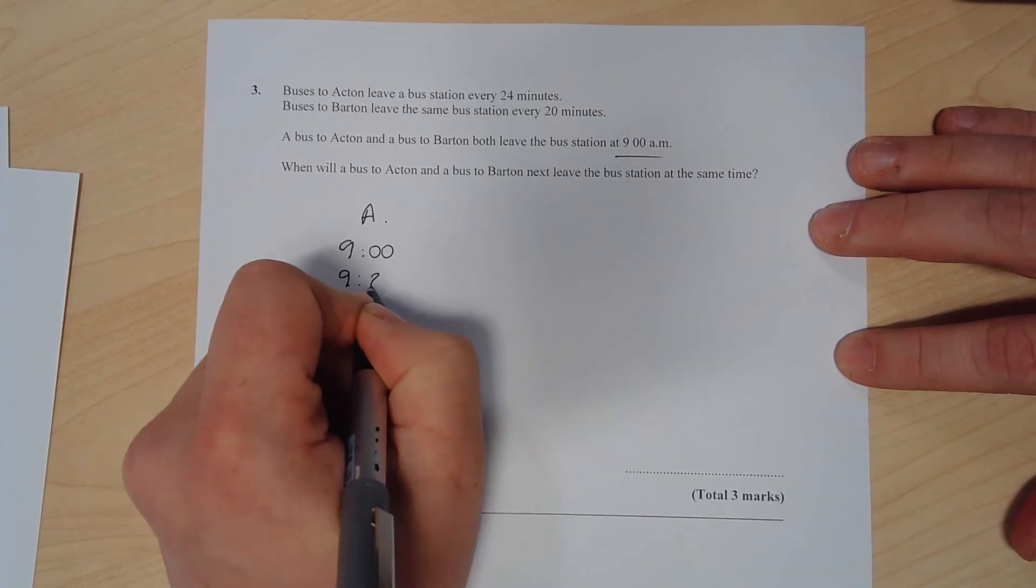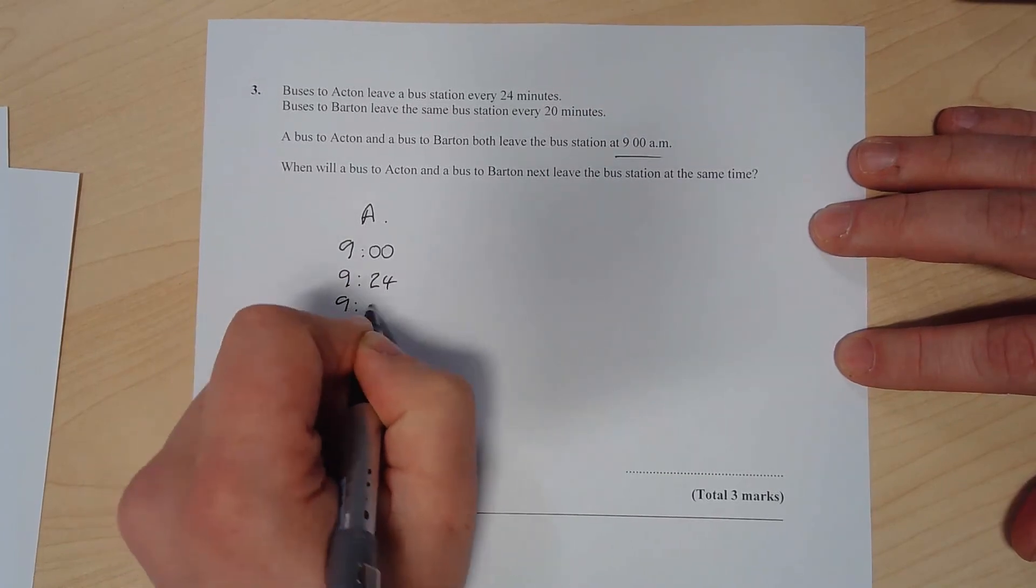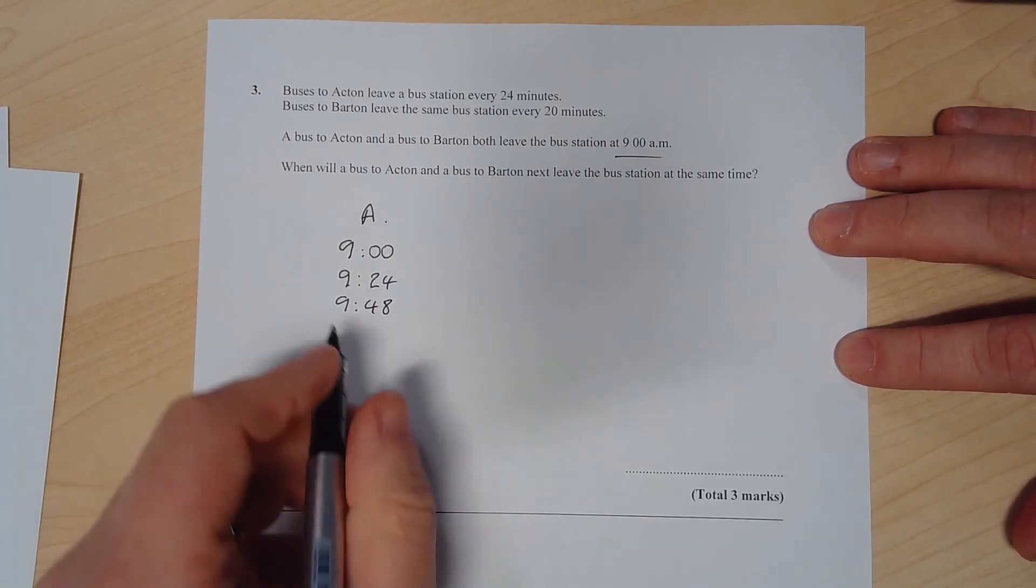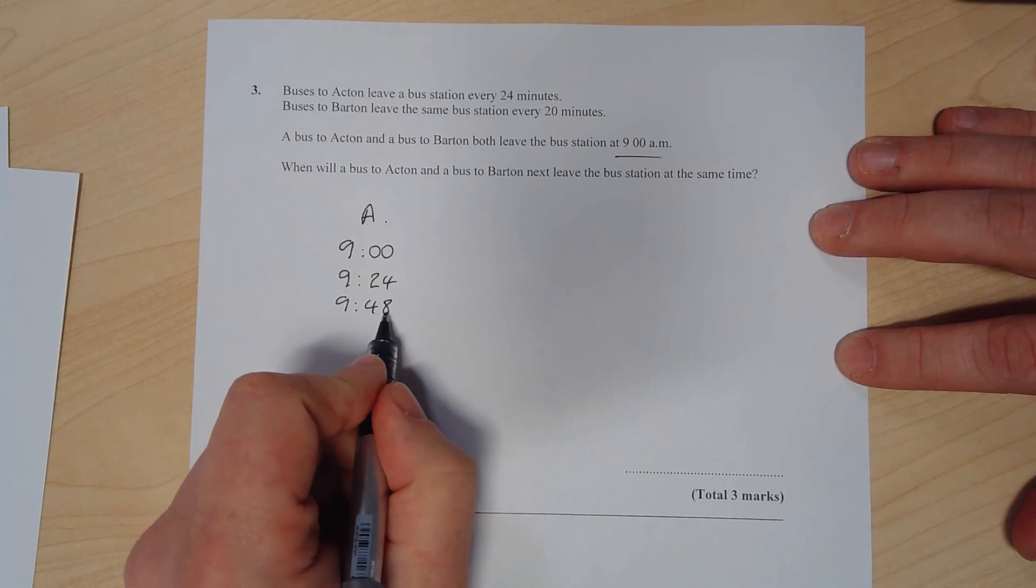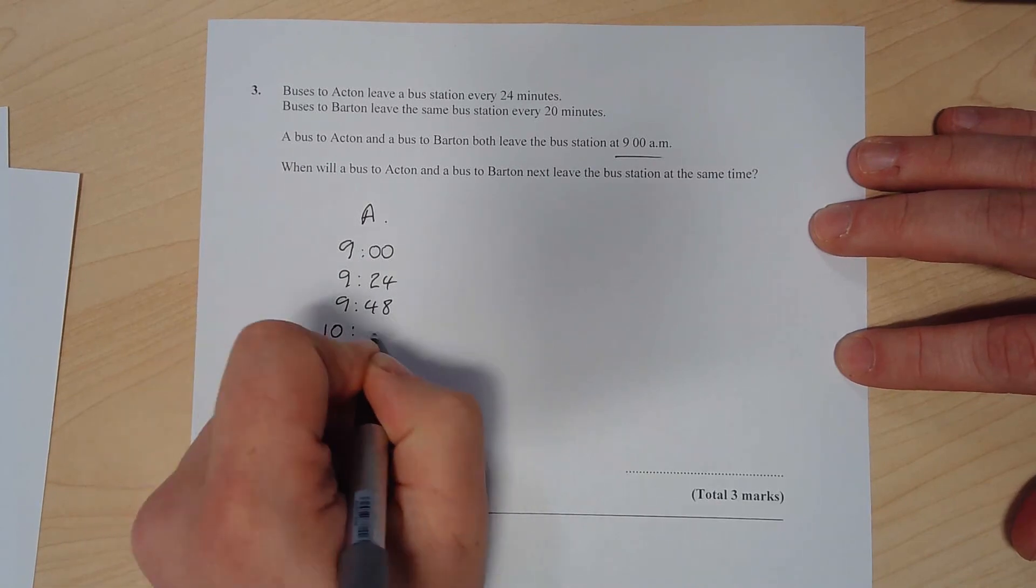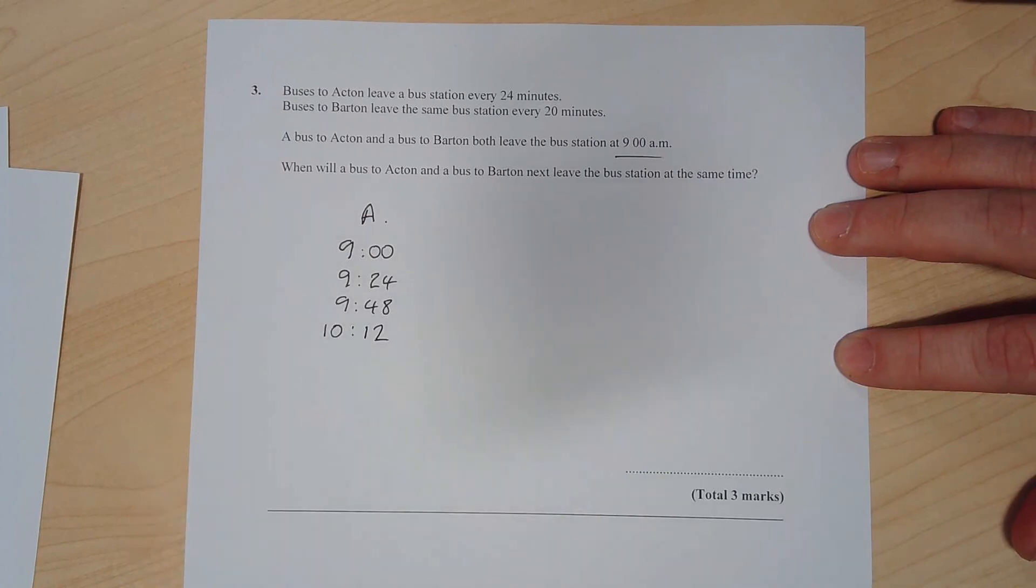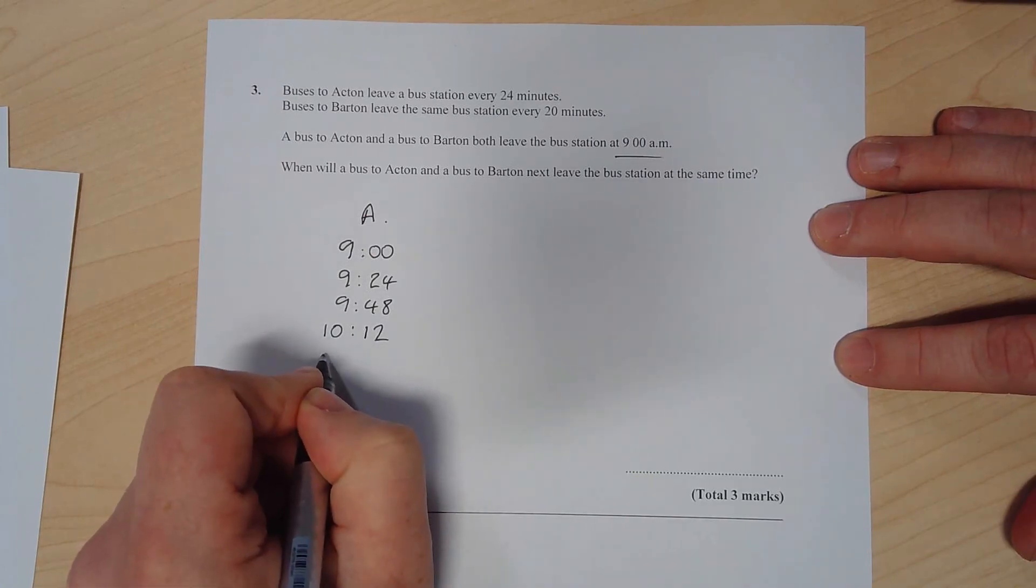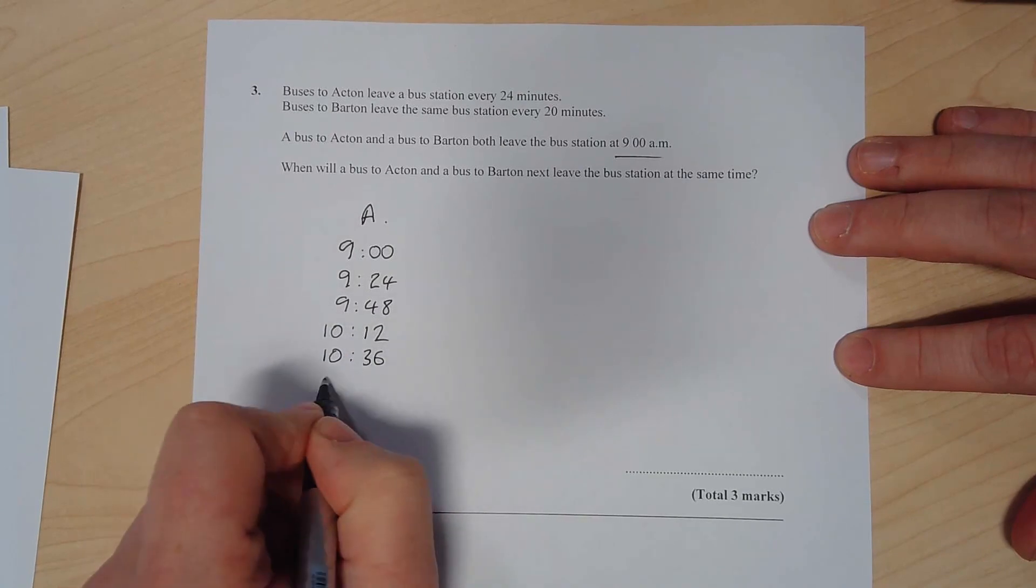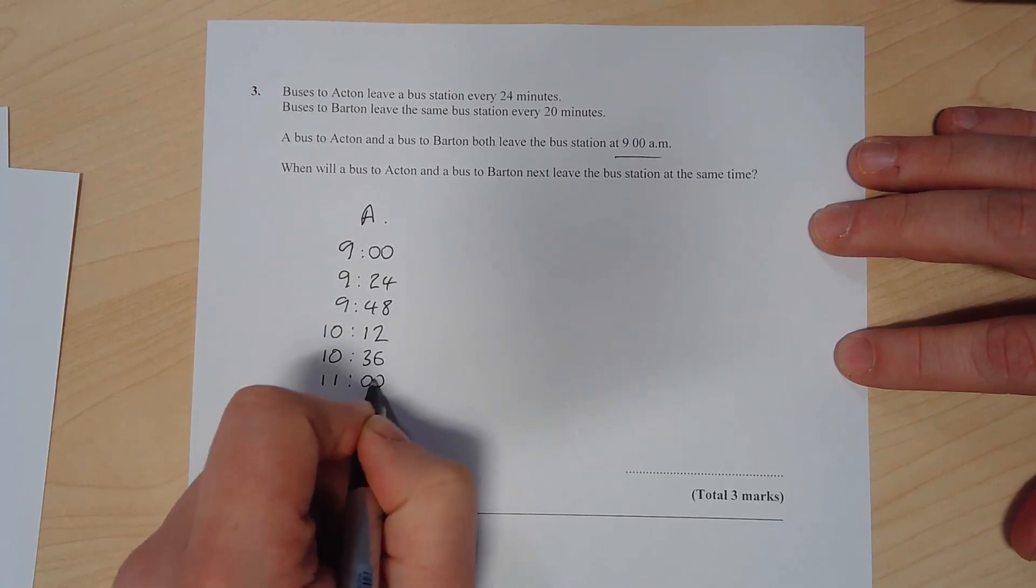Please don't write down the next bus is at 9:72! So 24 minutes after that - well, 12 minutes will get you up to 10 o'clock, and then another 12 minutes, so your next bus should be 10:12. Add on another 24 to that, so 10:36, and then 11 o'clock. Now you could carry on...